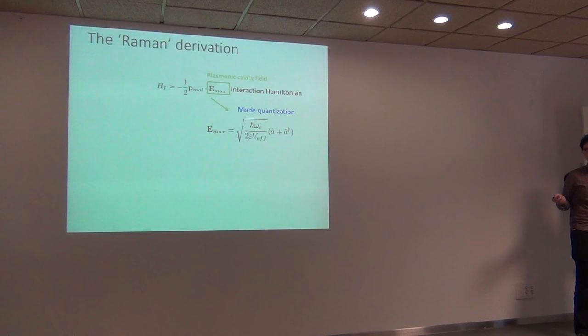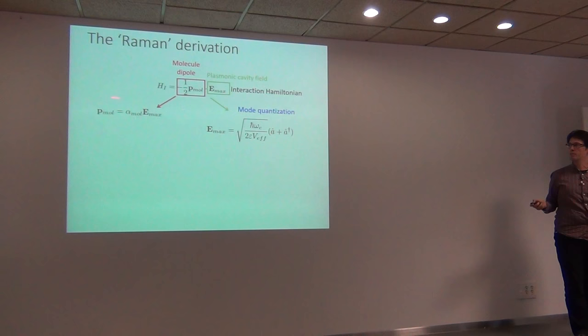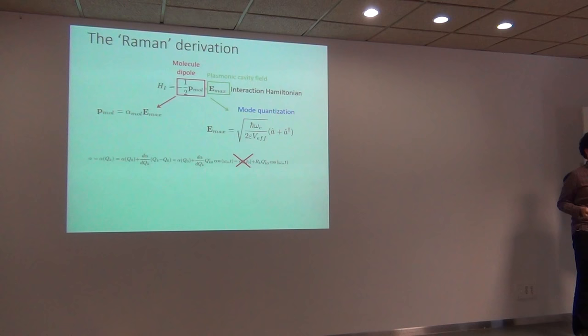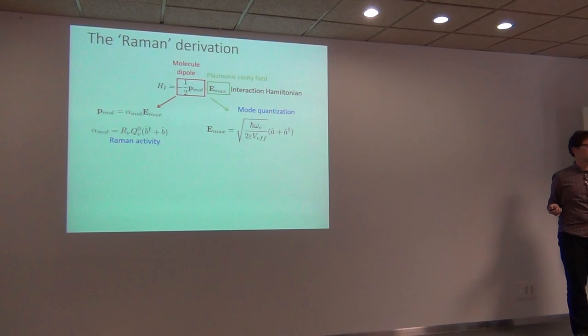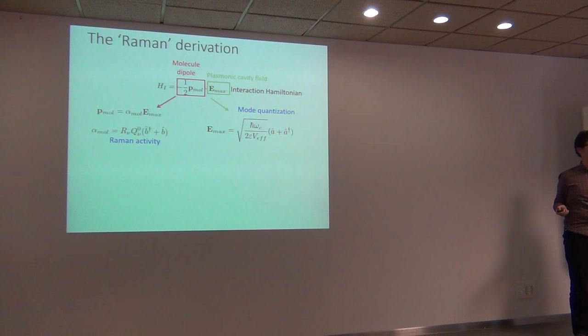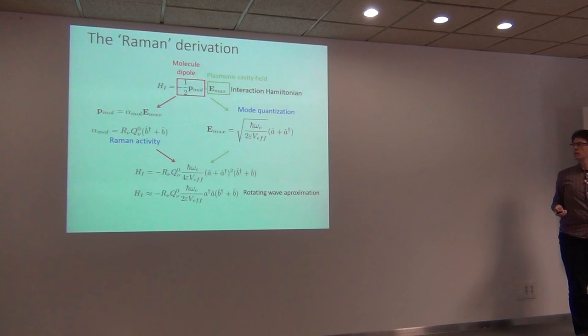For the molecule, the dipole moment is proportional to the polarizability. As in my classical description, the key is that the polarizability varies with the position of the atoms. In second quantization, this is written as a function of the vibrational operators. This gives the movement, and the relevant parameters are the Raman tensor — described before — and the zero-point motion of this generalized coordinate. Once we have this, we just put it together; the electric field enters twice, giving squared terms. Using the rotating wave approximation and neglecting terms that rotate very fast, we get our interaction Hamiltonian.